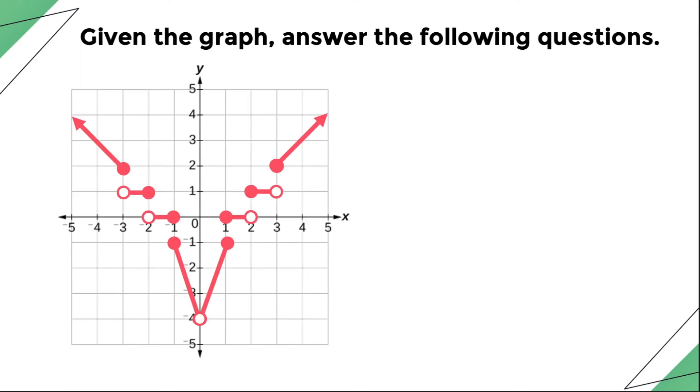For example 1, let us refer to the given graph and compute for the value of f(x) if x is equal to 3. This means that we're getting the y-coordinate of the point whenever x is equal to 3. By looking at the graph, there is a hollow circle that y is equal to 1 whenever x is equal to 3.